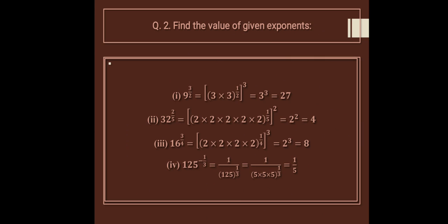2 upon 5 means 1 upon 5 into 2. We can represent it in bracket form as per the law of exponents, as explained in my previous videos. The 1/5th root of 32 is 2, and then raising to power 2 gives 2 squared, which equals 4.